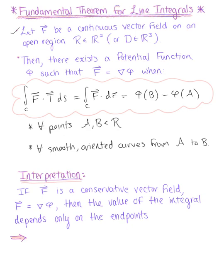So what exactly is this fundamental theorem telling us? Think about our interpretation of this theorem. We have that if vector F is a conservative vector field, such that we can define vector F as the gradient of our potential function phi, then the value of the integral depends only on the endpoints. So in other words, this is telling us that the line integral is path independent.